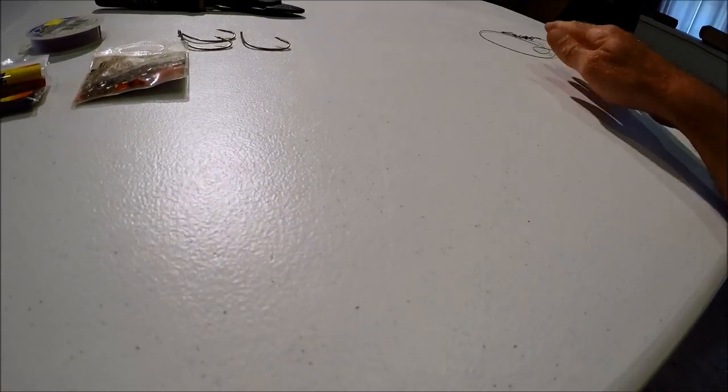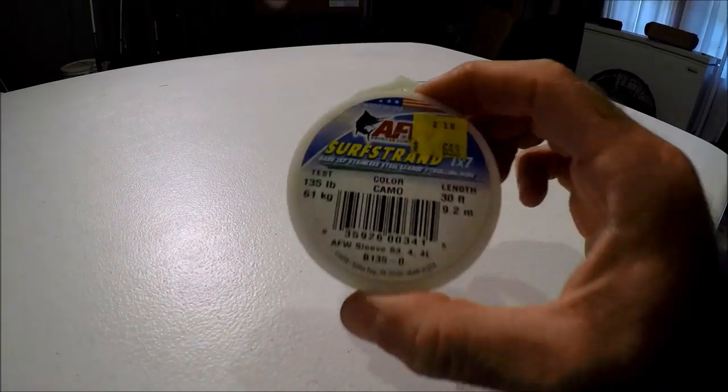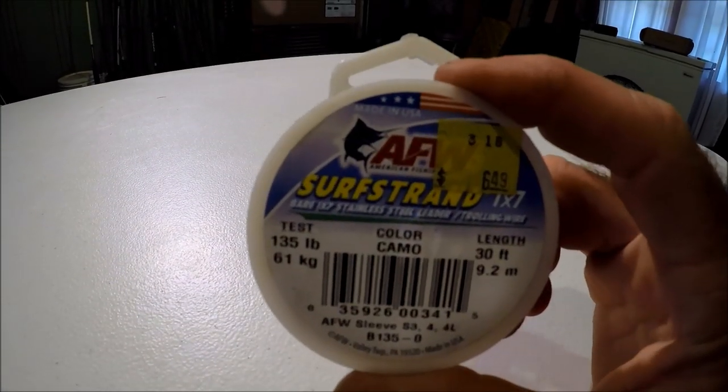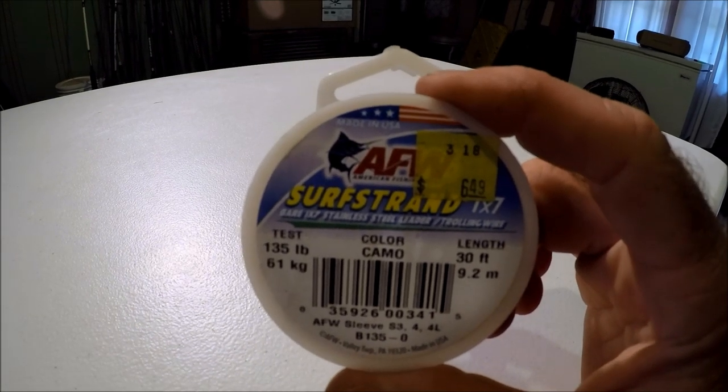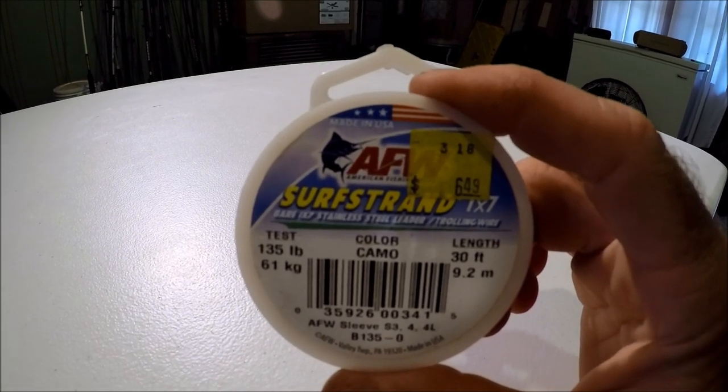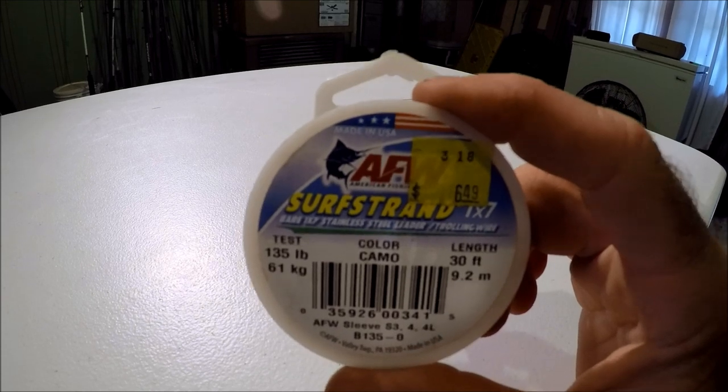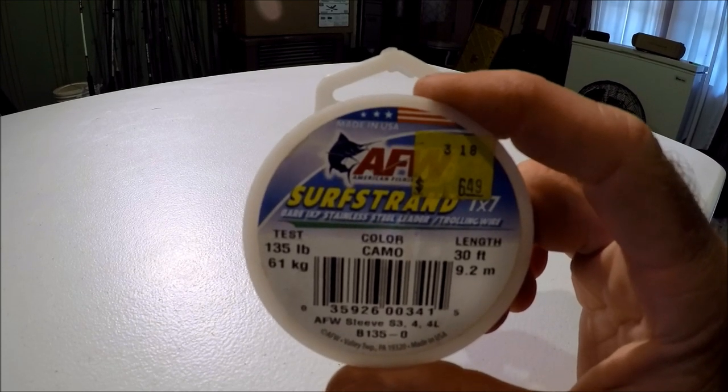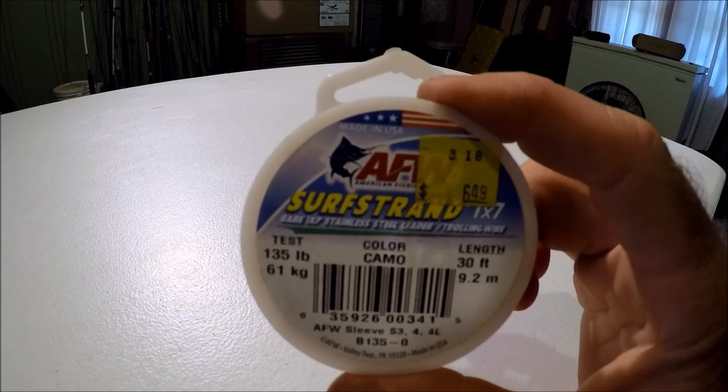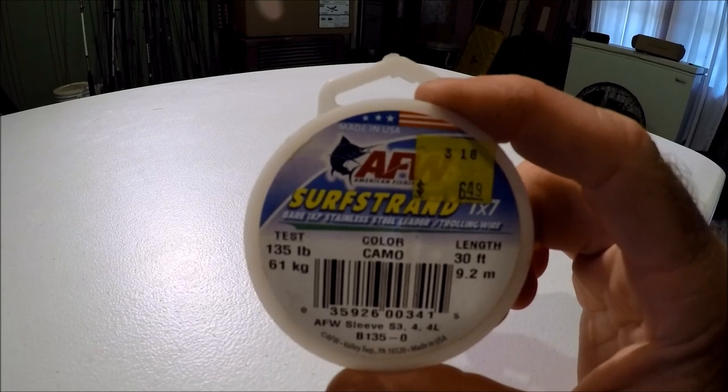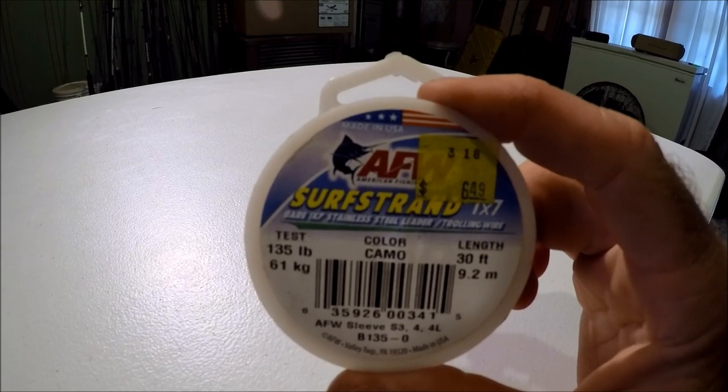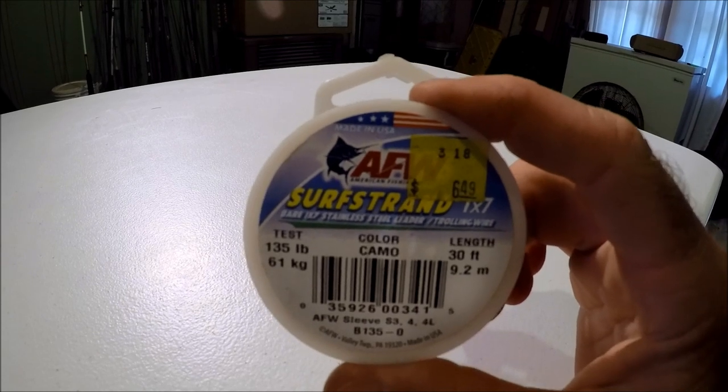So I don't use those anymore. First of all, I'm going to show you exactly what you need to make your own. It's not a lot of stuff either. Here's the first thing you need to look for: steel leader. I go pretty big because I'm targeting alligator gar. This is 135 pound, seven strand steel leader. This is one of my favorites. You don't have to use this company. Berkeley makes this stuff and some other people do as well, but I like this one a lot.